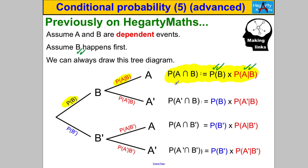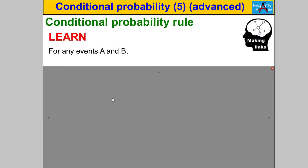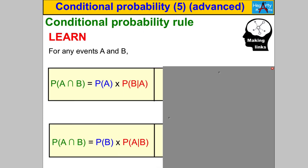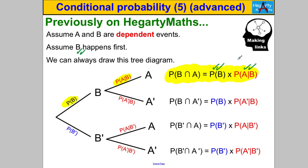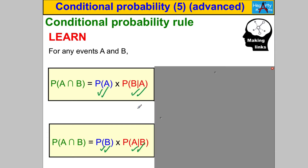Taking those two formulae together: for any events A and B, we can state that P(A∩B) = P(A) × P(B|A) — thinking of A happening first — or P(A∩B) = P(B) × P(A|B) — thinking of B happening first. These come from our two tree diagrams.